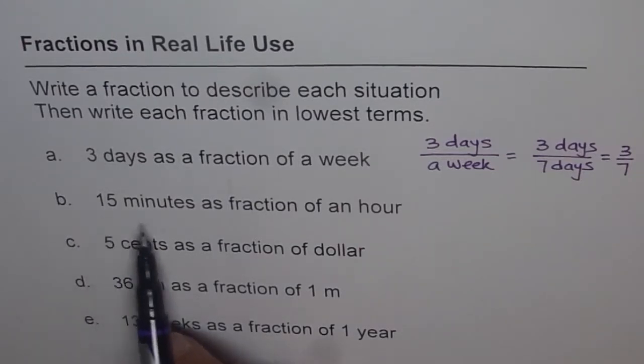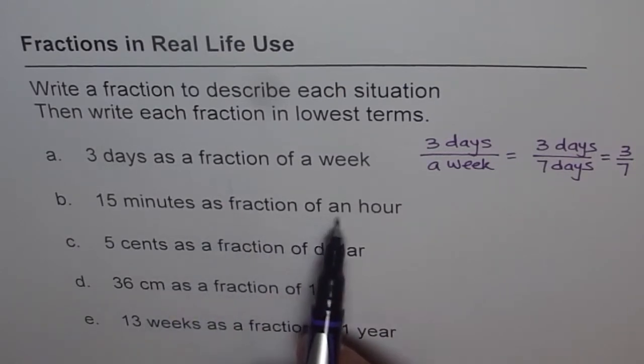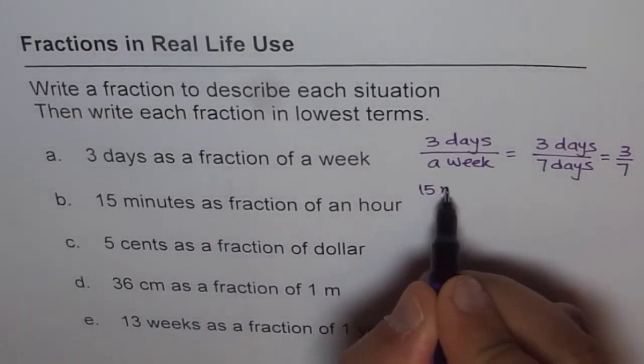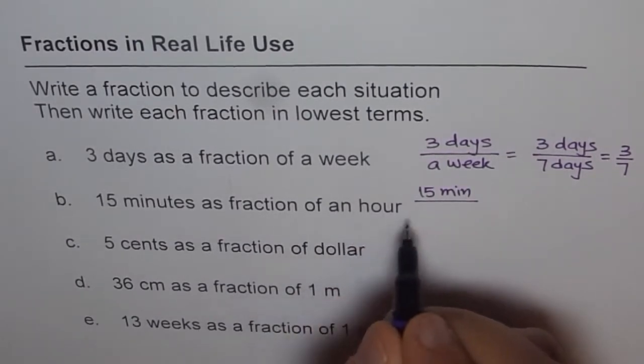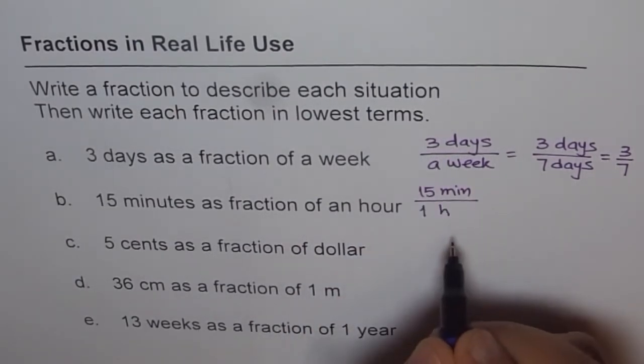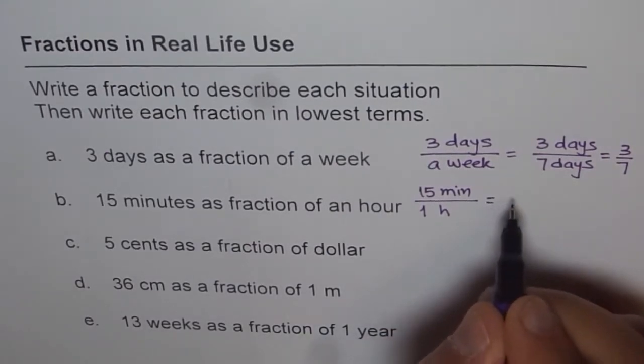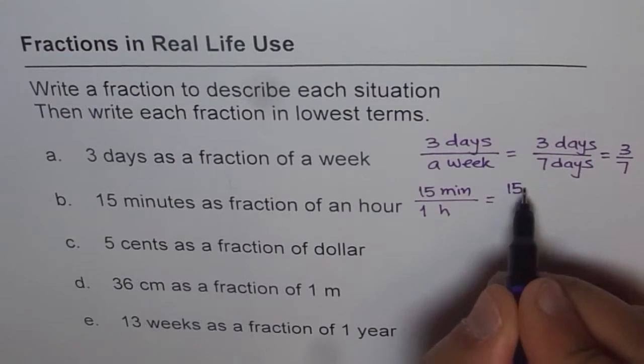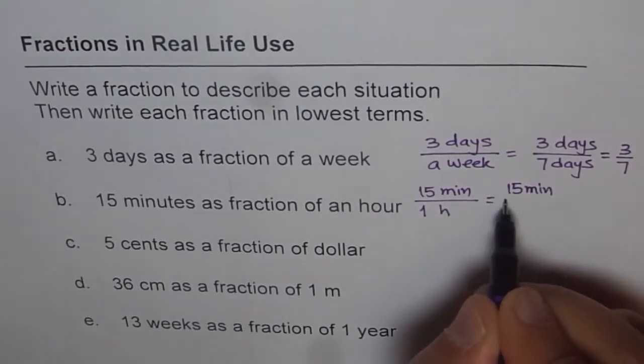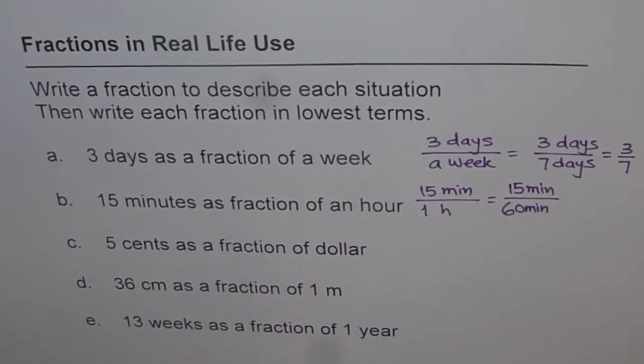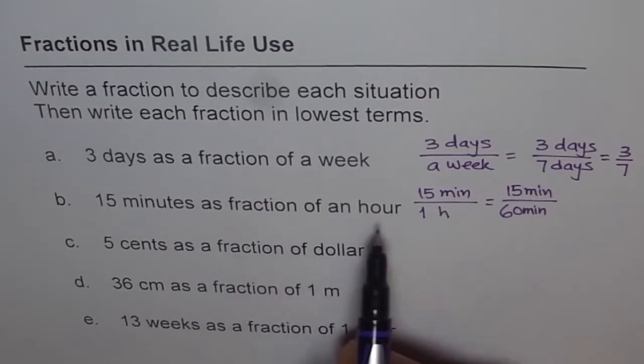B is 15 minutes as fraction of an hour. So let us write 15 minutes on the top which is 15 minutes, and an hour, that means 1 hour, right? Now, how many minutes are there in an hour? There are 60 minutes. So we can write this as 15 minutes over 60 minutes, correct? So that is the fraction which represents 15 minutes as fraction of an hour.